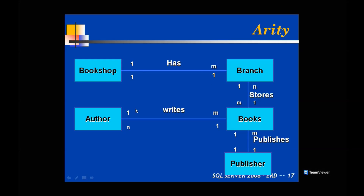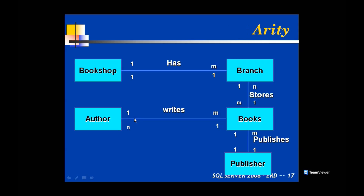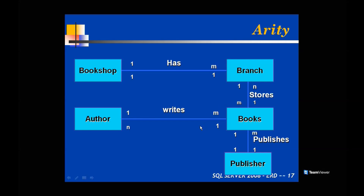One author can write many books and one book can be written by many authors, so author and books is a many-to-many relationship. One branch can store multiple books and one kind of book can be stored in multiple branches — that is also M-to-M. One publisher can publish many books but one book can be published by only one publisher — that is one-to-M. In this case study we have one-to-M and many-to-many but not one-to-one.